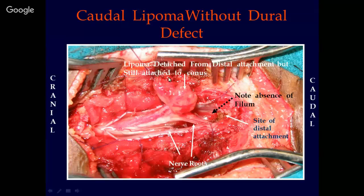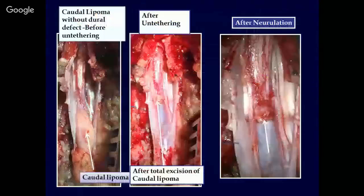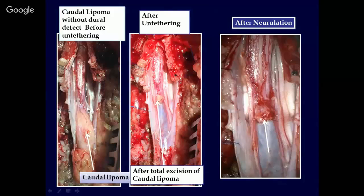Here is another example of a caudal lipoma without dural defect showing all three images. After opening the dura, the cord is stretched and the lipoma is adherent to the conus medullaris. This is following total excision of the lipoma, and this is following neurulation of the conus medullaris.